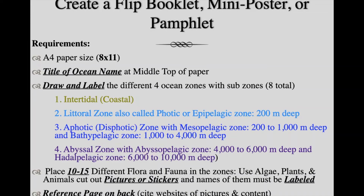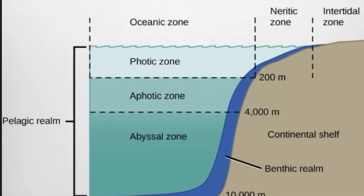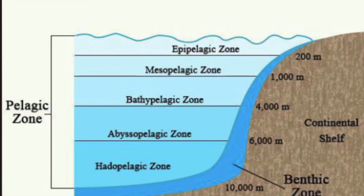On the back of the A4 paper you're going to have your reference page. We're going to use this to help you identify intertidal, photic, aphotic, and abyssal, and you can use this page for the separations. I would also write down how many meters deep each zone is to help you visualize and study this.